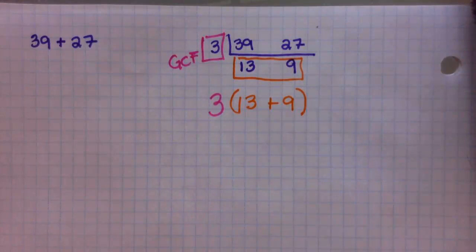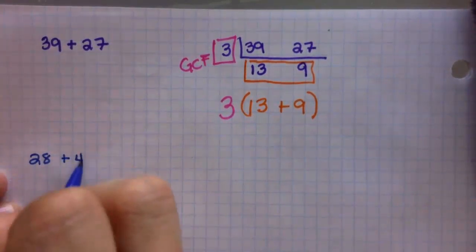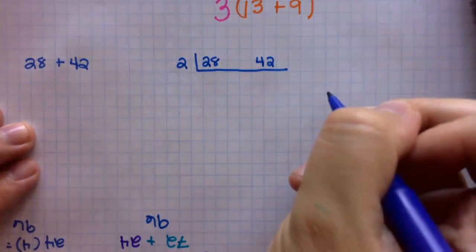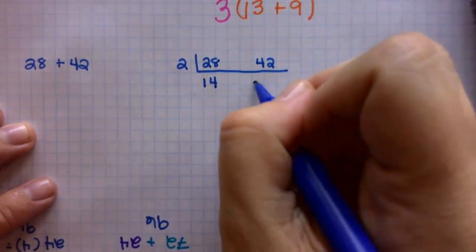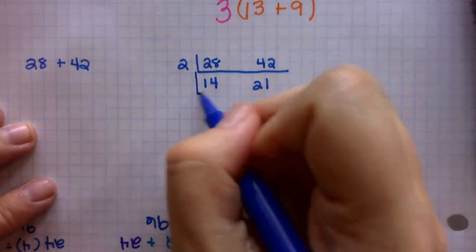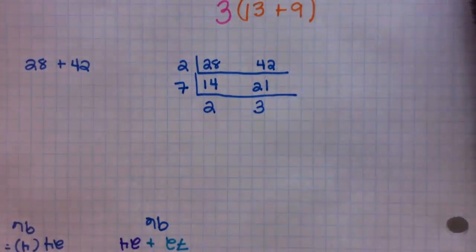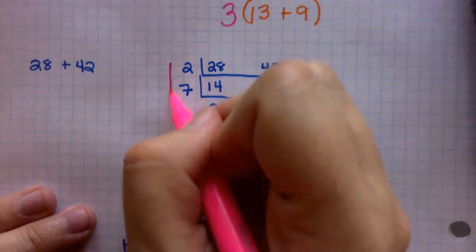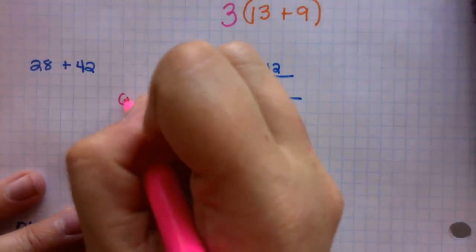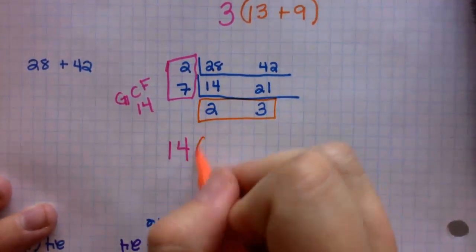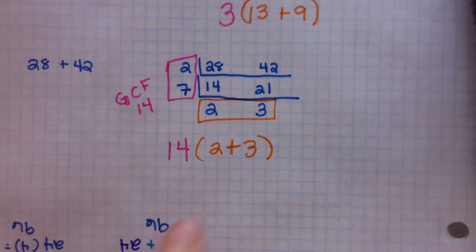And I know I'm going fast, please just rewind it. You can watch the examples again. I've got one more example for you, last one. 28 plus 42. We're going to go ahead: 28 and 42. 2, because they're even numbers, gives us 14 and 21. And then I know that they both share a prime factor of 7. 14 divided by 7 is 2, and 21 divided by 7 is 3. I can't go any farther. So you're going to take the GCF, which is 2 times 7, so the GCF is 14. You're going to write that out, and then you just take these numbers and write them just like that: 14(2 + 3). And that's your final answer.